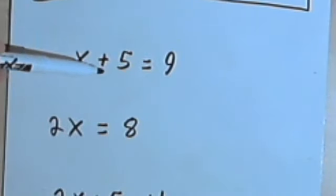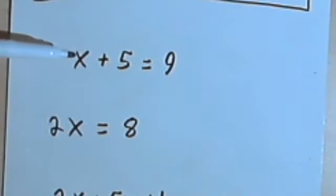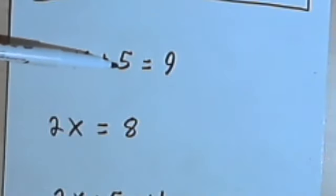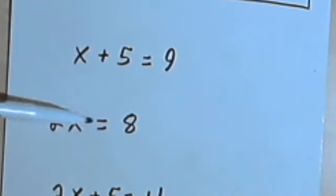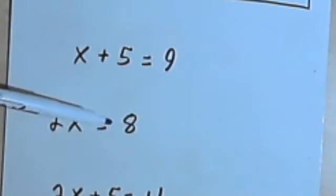You've seen things like x plus 5 equals 9, and you know you're going to solve this by subtracting the 5 from both sides. Or maybe you'll have a multiplication, 2x equals 8, and you would solve that by dividing both sides by 2.